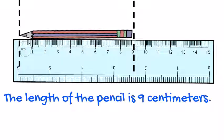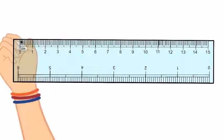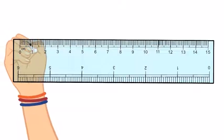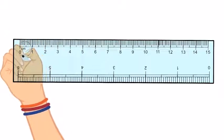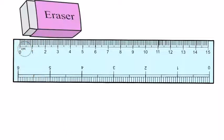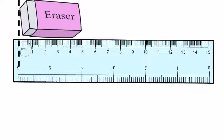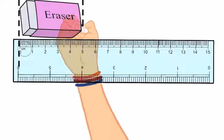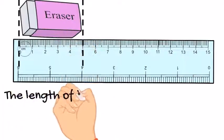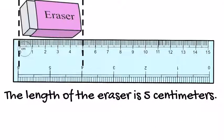Let's try the other object, which was our eraser. Again, we're also always looking for the CM, which stands for centimeters. Now we're going to measure the length of the eraser by seeing where it ends. And this time the eraser ends at five. So the length of the eraser is five centimeters.